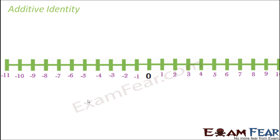Now we talk about another important property called additive identity. What is additive identity? It is a number which, when added to any integer, retains the identity — that means retains the value — of that integer. When you add this number to an integer, the integer remains the same. Do you know what that number is? Nothing but 0.